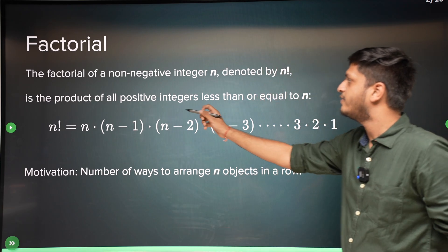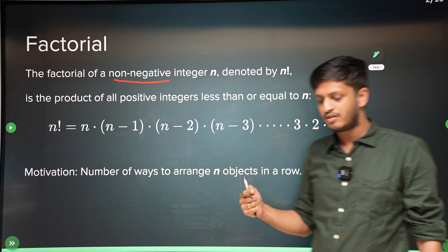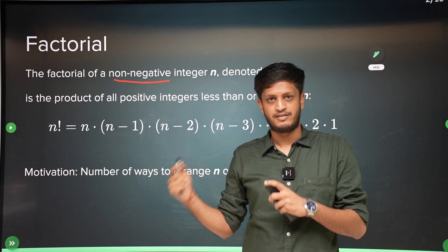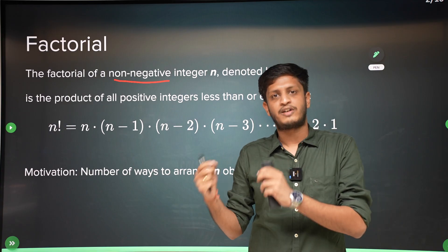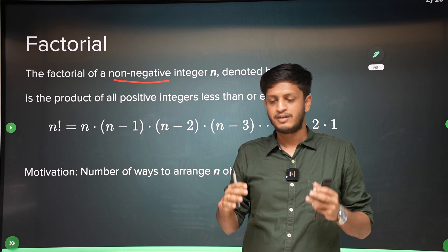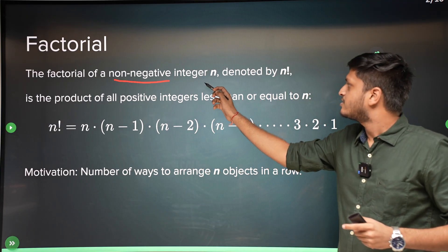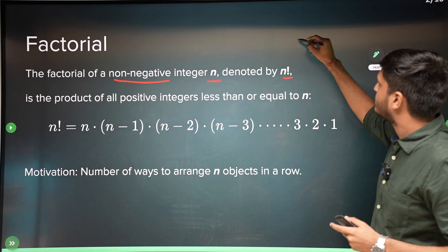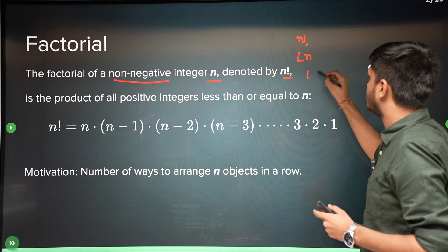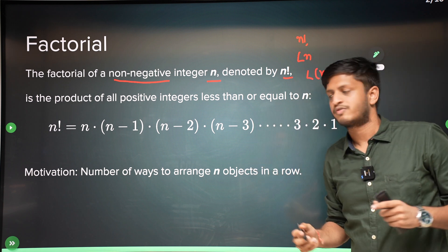Factorial of a non-negative integer — factorials are not defined for negative integers. We will use the notion of factorial on negative integers later when covering the binomial theorem, but that is not how factorial is defined. By definition, factorial is only defined for positive integers. The factorial of n is denoted n! (using the exclamation mark), or with the factorial symbol — for example, factorial of (n+1).